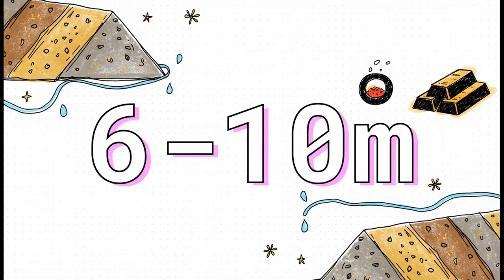The prepared ore is stacked into these massive piles, or heaps, that can be 6 to 10 meters high. That's as tall as a three-story building. And of course, these heaps are built on top of specially designed pads with these super heavy-duty liners to make sure not a single drop of that valuable solution leaks out.